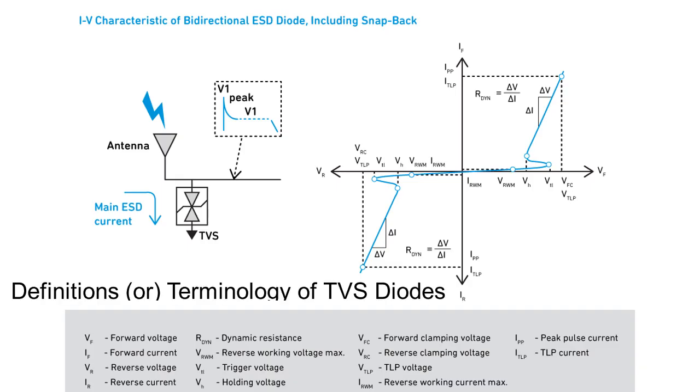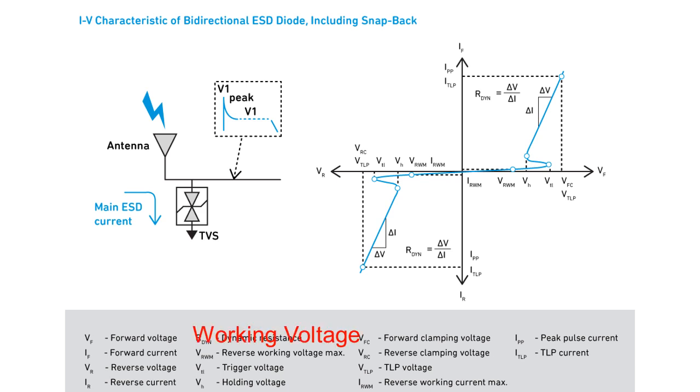Definitions or terminology of TVS diodes: Reverse standoff voltage VRWM - this is the normal DC operating voltage of the device. At this point, the device will appear as high impedance to the protected circuit. It is also known as working voltage. Devices are available ranging from 2.8 volts to 440 volts.